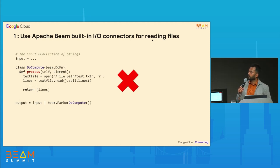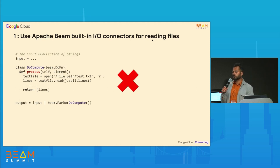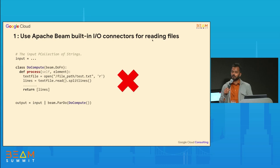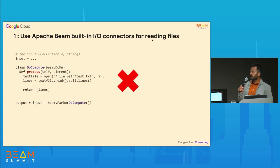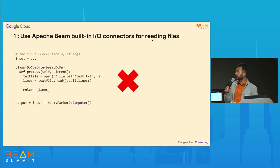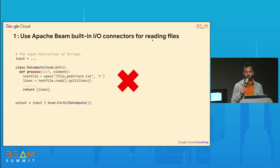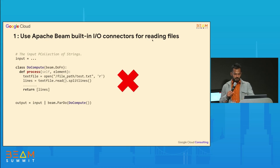If you have a use case where you need to open a file, always use the Apache Beam built-in I/O connectors. If the file size is fairly small you could potentially do it, but the caveat is that there will be multiple copies of those files and you're also reading from that source system hundreds and thousands of times. So it's an anti-pattern.